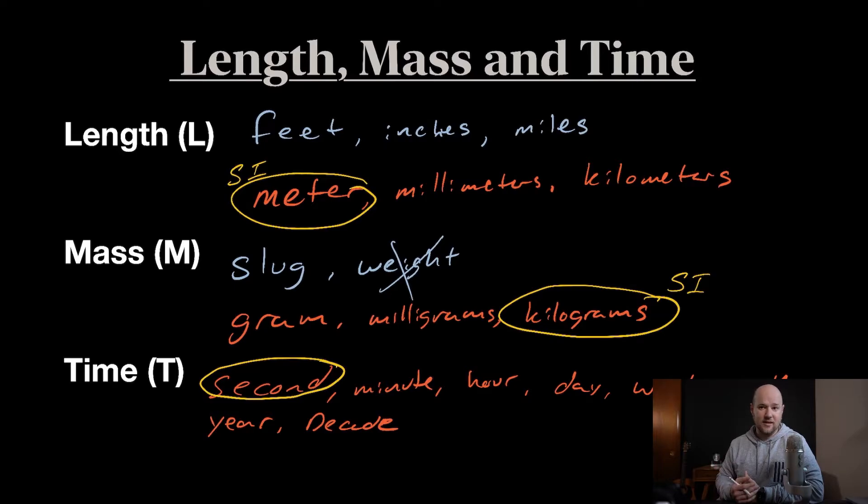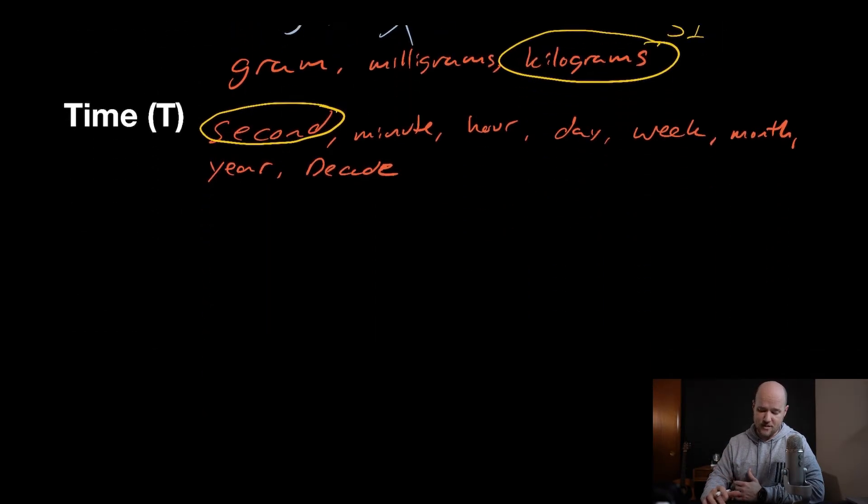So you might have a millisecond, you might have a kilosecond. Now there's an actual benefit to using meters, grams, and seconds for all of our measurements, and also using this SI system unit of measurements, and that benefit is that it's very easy to convert between units. And let me show you what I mean by that.